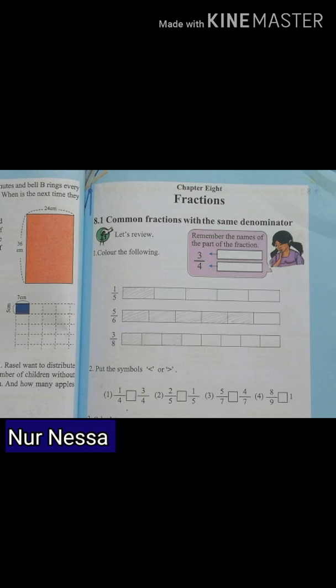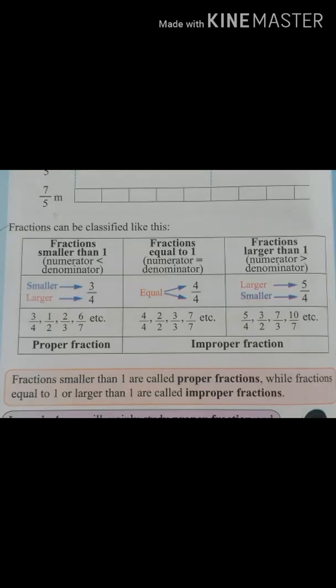এখানে একটি fraction হচ্ছে 1/4, একটি হচ্ছে 3/4। আমরা কি বেশি piece নিলে বেশি হবে? Right! তাহলে 1/4 এবং 3/4 — এ দুটোর মধ্যে কোনটি বড়? 3/4. Very good! তাহলে একটা fraction দেখতে এক রকম না বাবা। কোনো কোনো fraction আমরা কী দেখি?